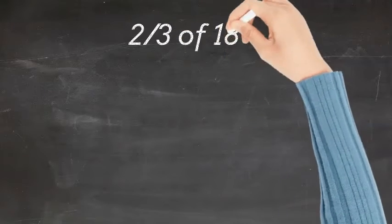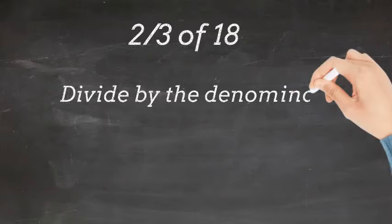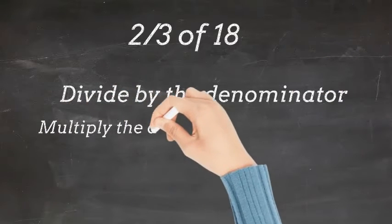Let's begin with 2 thirds of 18. So the strategy we are going to use is divide by the denominator, then multiply by the numerator.